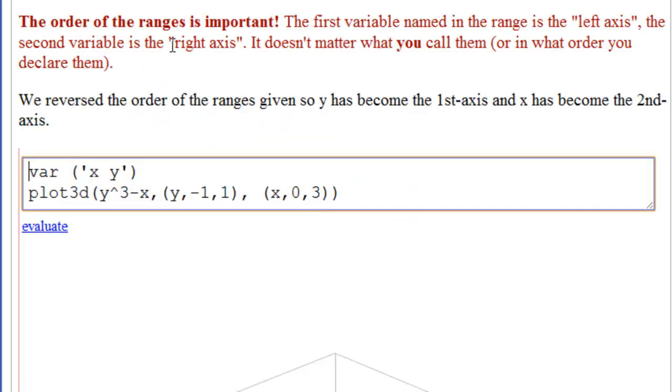I want to emphasize that the order that you put the ranges is important. The first variable named in the range is the left axis. The second variable is the right axis. It doesn't matter what you call them or in what order you declare them. Been there, got burned. We reversed the order of the ranges here so that you can see this.